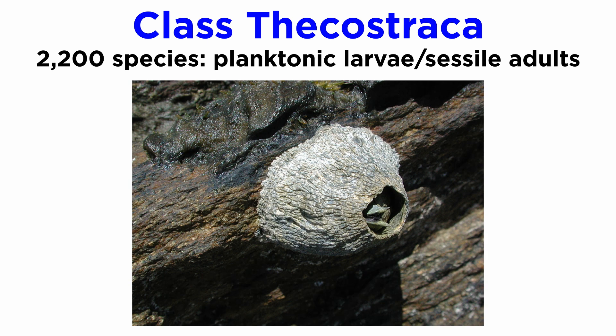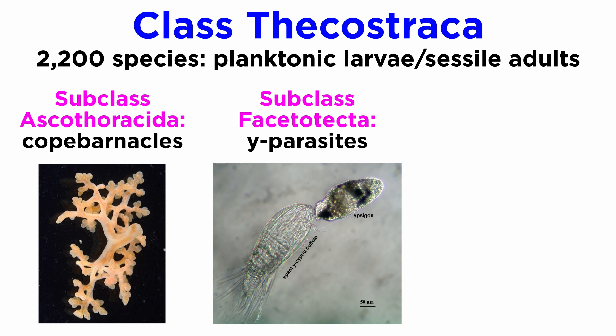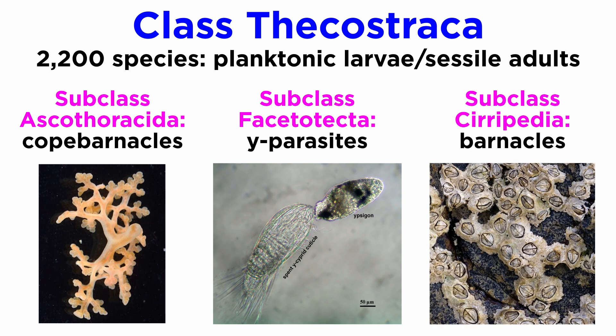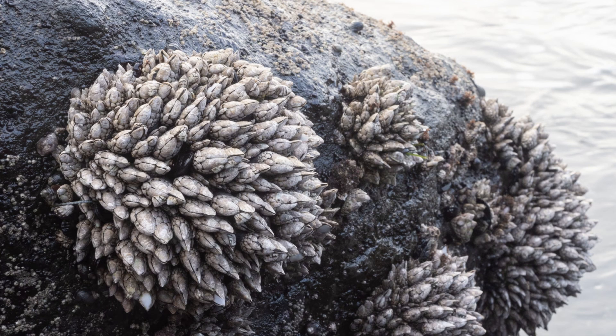Thecostraca is split into three subclasses: Ascothoracida, sometimes called the 'copepod barnacles' due to the resemblance of many species to copepods; Facetotecta, which includes just 11 species of mysterious Y-parasites; and Cirripedia, most of which are commonly known as barnacles. As adults, barnacles are sessile and found around the world in almost all marine environments, where they attach themselves to the substrate either directly, as in acorn barnacles, or by a stalk, as in gooseneck barnacles.